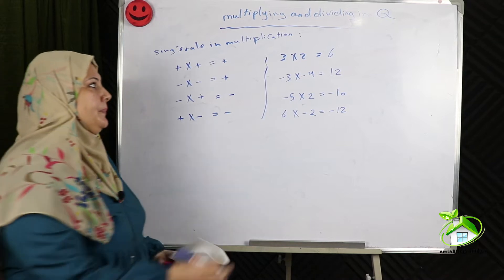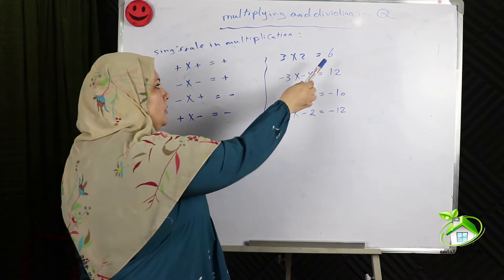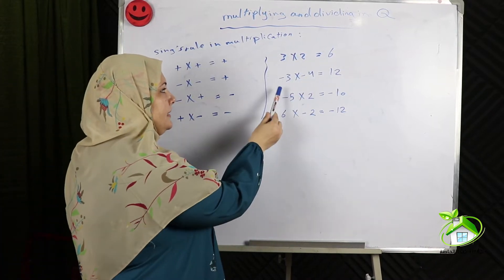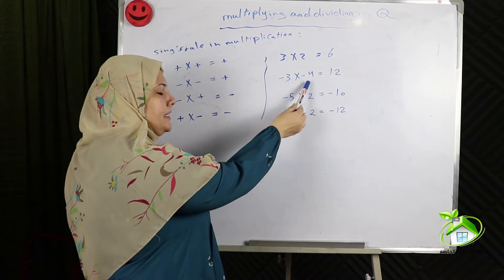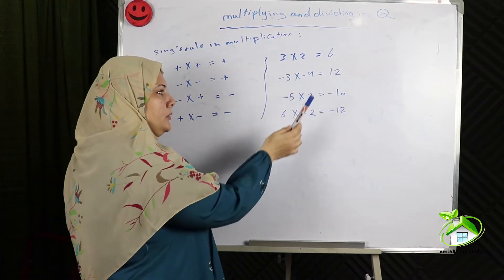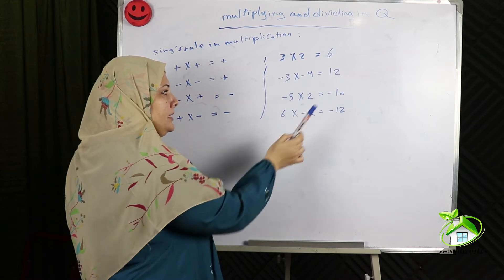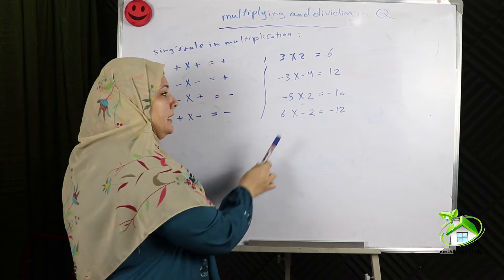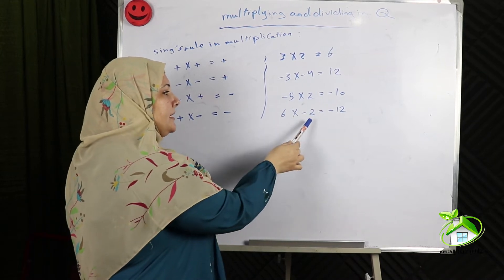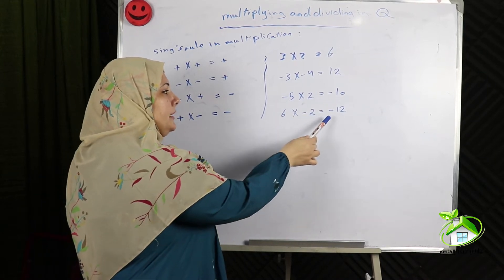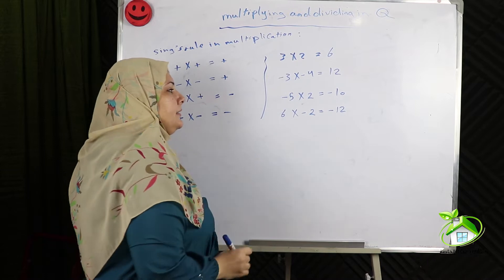For example: 3 times 2 equals 6. Negative 3 times negative 4 equals 12. Negative 5 times 2 equals negative 10. 6 times negative 2 equals negative 12.